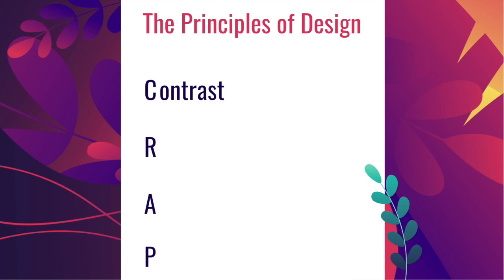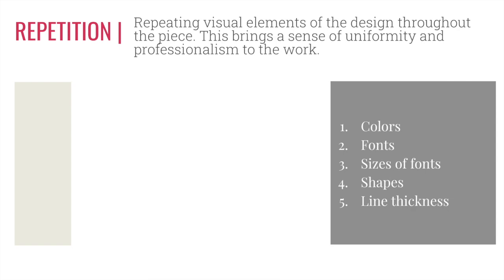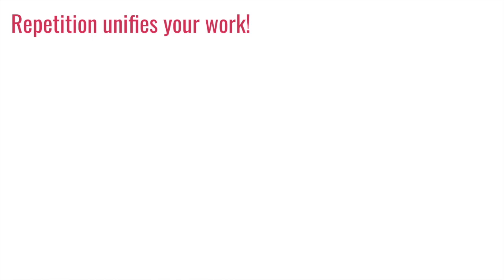Now that we've learned about contrast, let's learn about the R in CRAP — that stands for repetition. Repeating visual elements of the design throughout the piece is the principle of repetition. This brings a sense of uniformity and professionalism to the work. You can repeat colors, fonts, sizes of fonts, shapes, and even line thickness. In this example you can see that the colors of the titles all repeat, the fonts for titles and subtitles all repeat, as well as the colors of those fonts and the shapes, lines, and thickness.